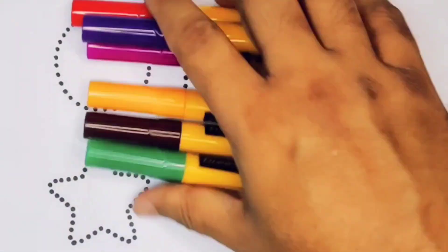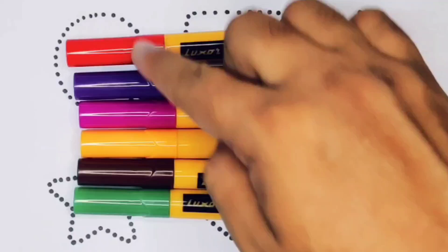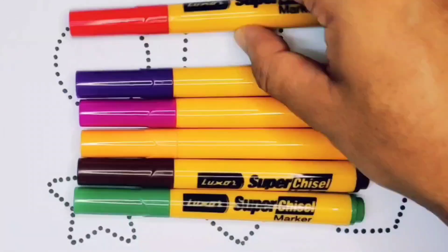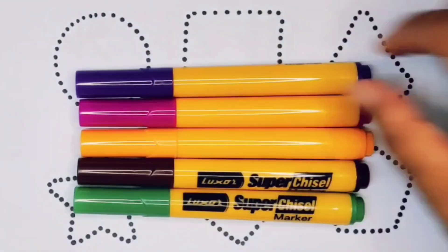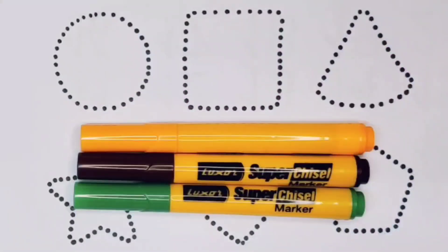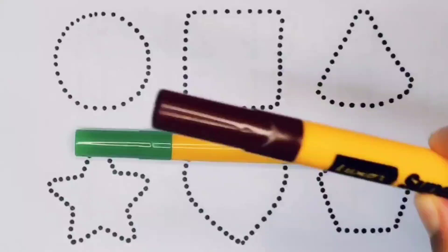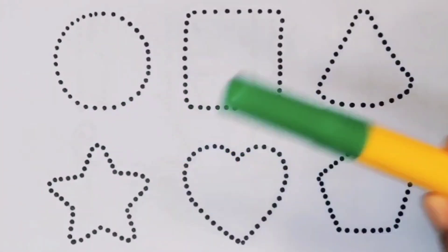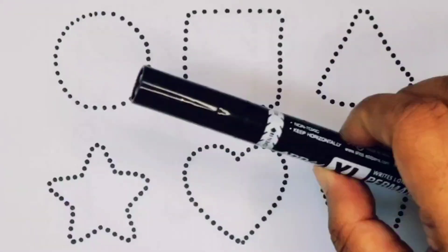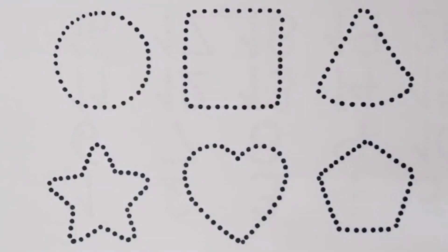Hello kids, welcome to my new video. First we're going to learn the color names: red, purple, pink, orange, chocolate, green, and black. Now let's learn the 2D shapes.